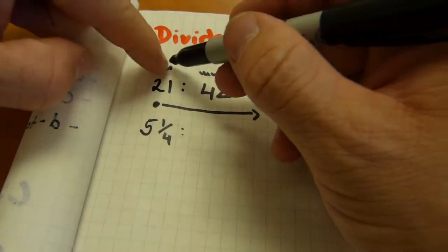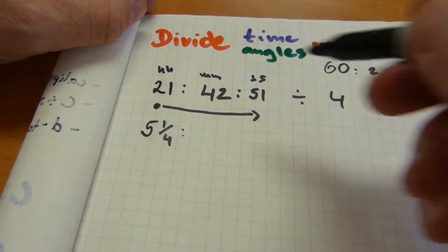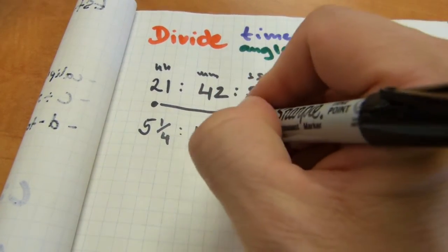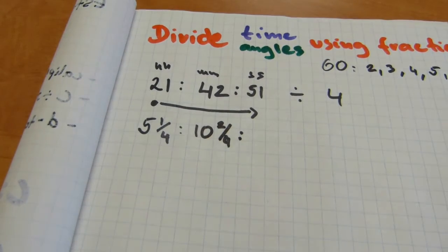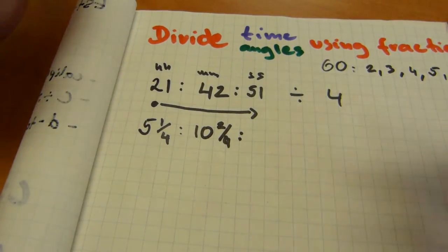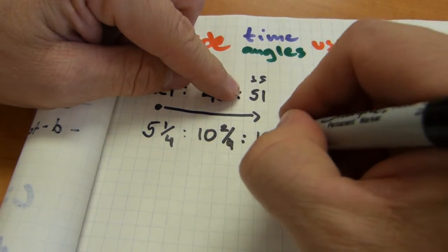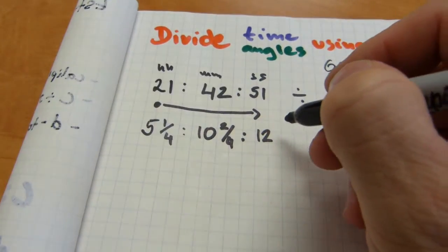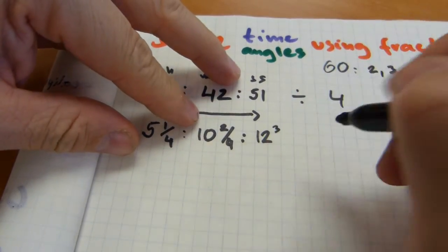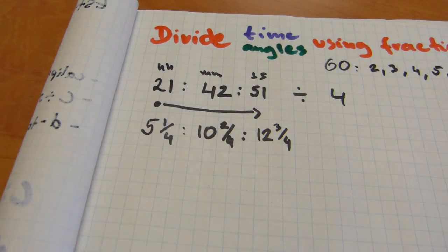Now we repeat the same with minutes. Leave it in this invisible hours column for now and then we'll divide the minutes. 4 goes into 42, 10 times with a remainder of 2. Just leave it there, 2 over 4, same as 1 over 2, half a minute. 4 goes into 51, that's about 12 there, 49, 50, 51 so we have 3 more to go and that's the remainder, 3 quarters. So there's the fractional hours, fractional minutes, fractional seconds.